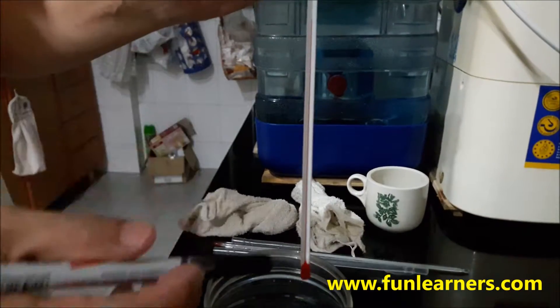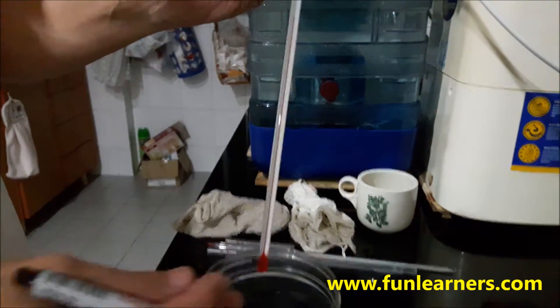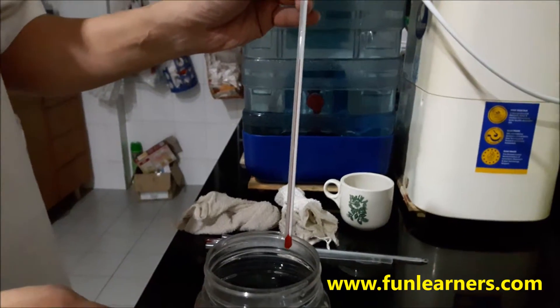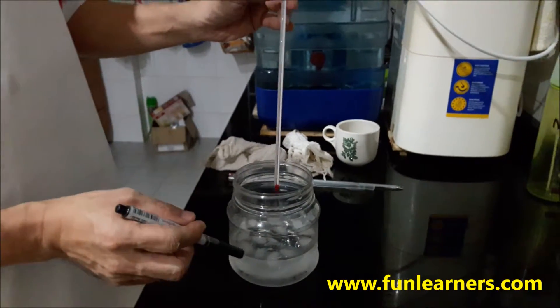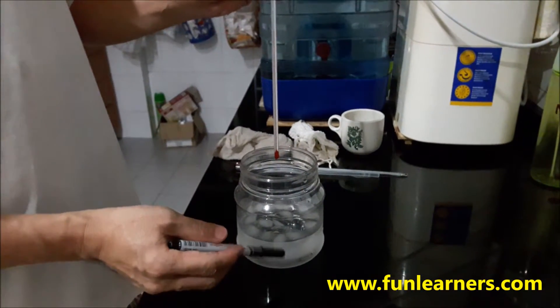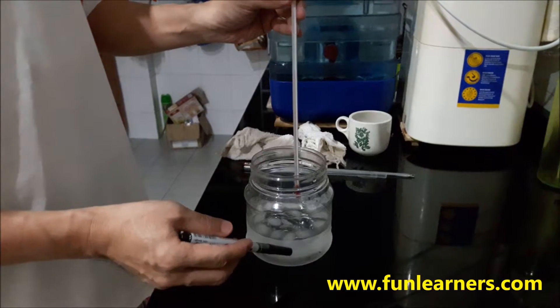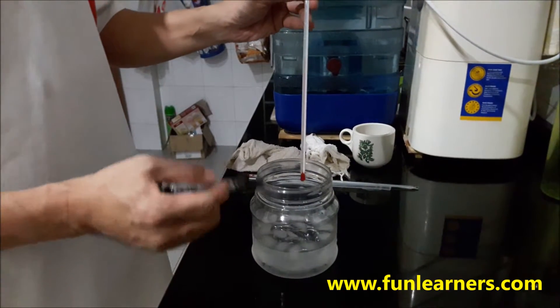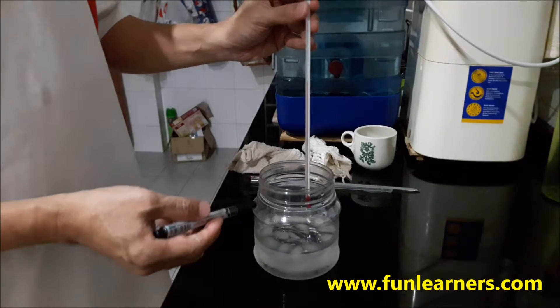Okay, this is a thermometer without any scale. Now we are going to calibrate it using a very simple method. So we will have ice water here, melting ice. The temperature should be about 0 degrees Celsius. This is an approximate method.